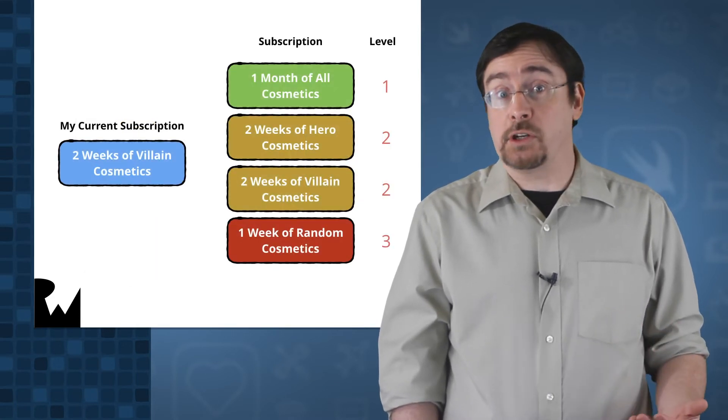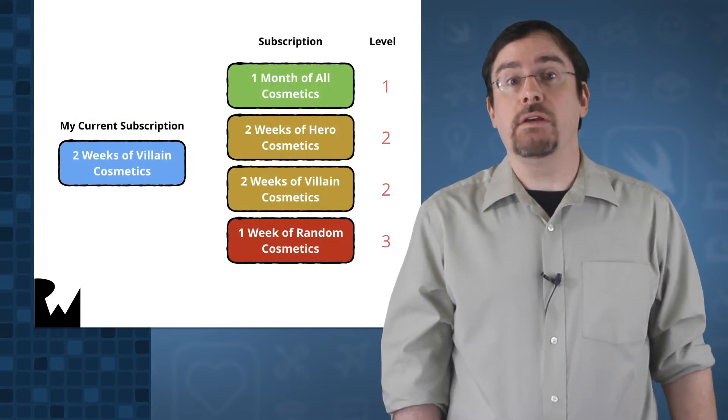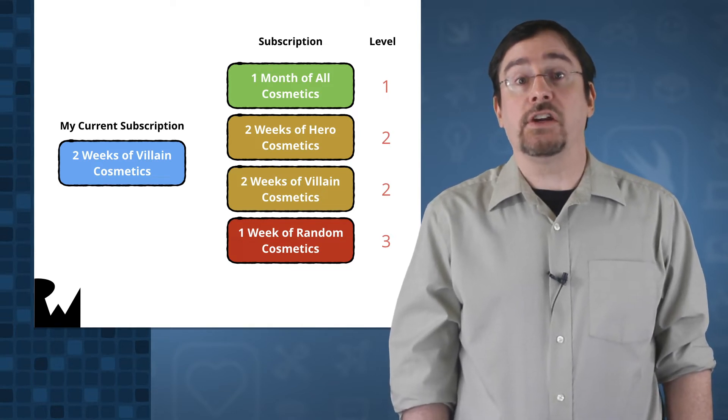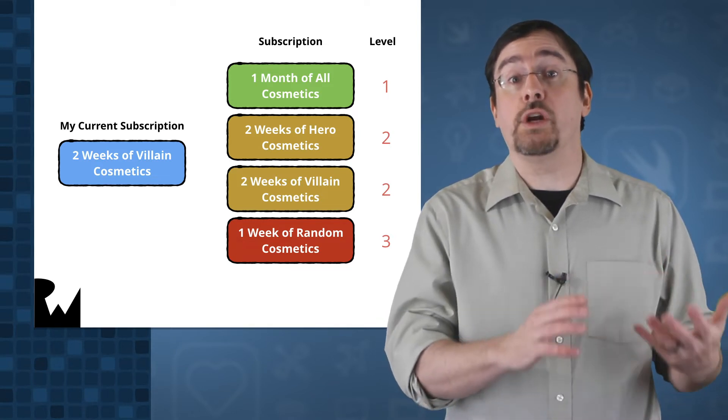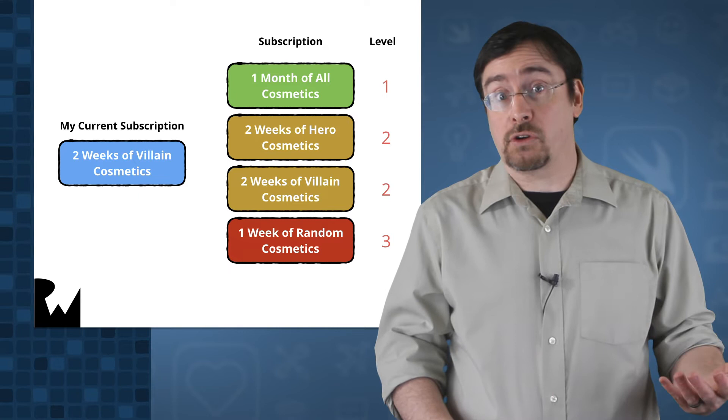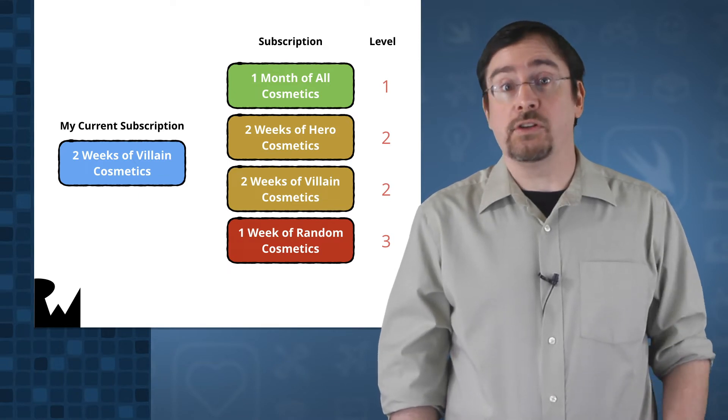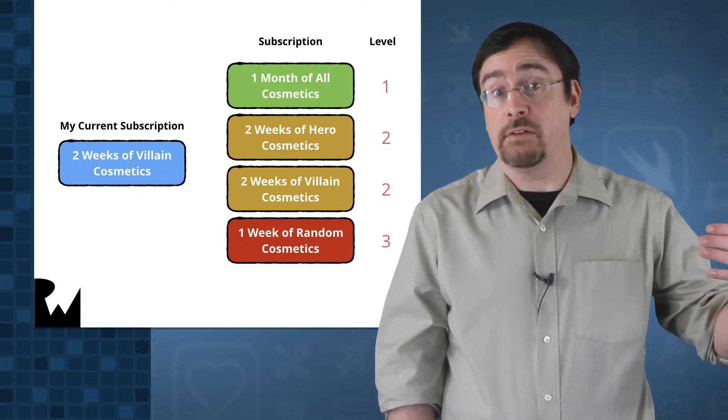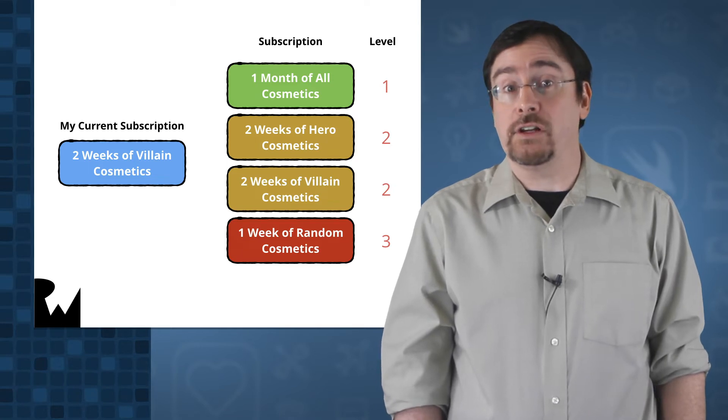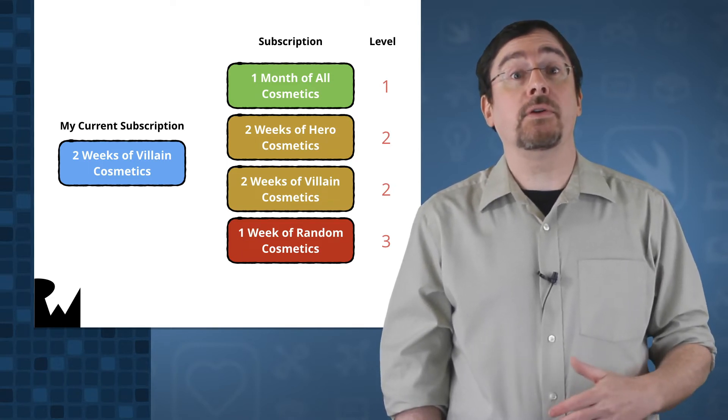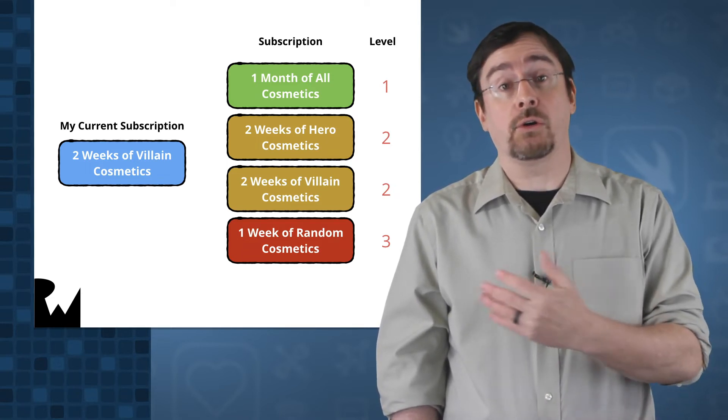When you create multiple subscription options in the same group, you give them service levels. Essentially, you give your most feature-rich option as the top subscription. Lesser subscriptions increase their service levels. By including different service levels, customers have the ability to upgrade, downgrade, or cross-grade.